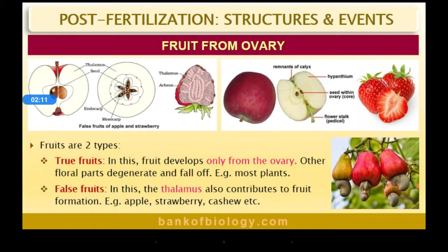False fruits develop from parts other than the ovary. You may recall the thalamus — the swollen part above the stalk. In false fruits, the thalamus also contributes to fruit formation. Examples include apple, strawberry, and cashew. In cashew, the swollen part above the stalk is the thalamus, which becomes the fruit.